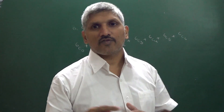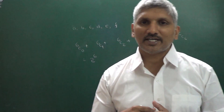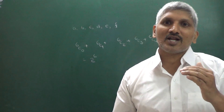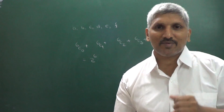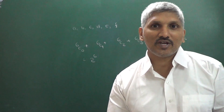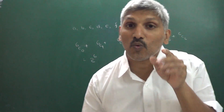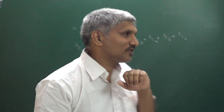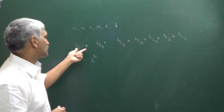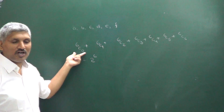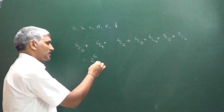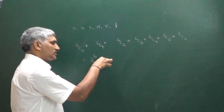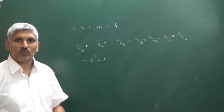Suppose he is asking: from those 6 items, 1 or more can be selected in how many ways? That means the case of nothing selected we have to remove. So the answer is 2 to the power of 6 minus 1.